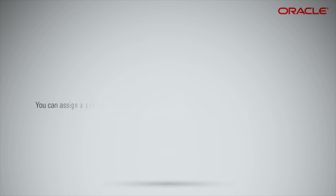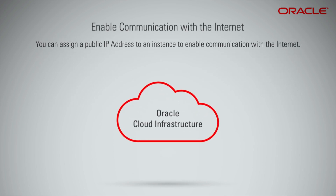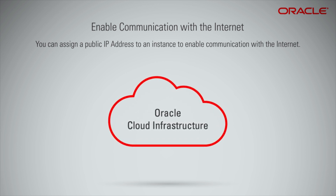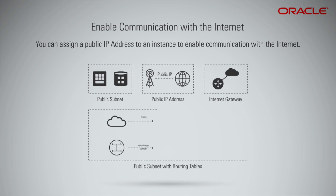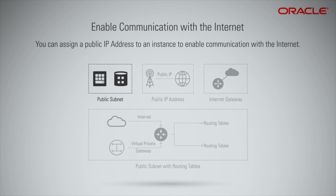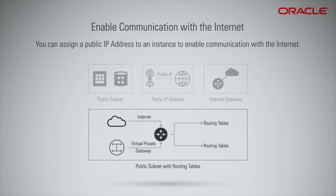You can assign a public IP address to an instance to enable communication with the Internet. The instance is assigned a public IP address from the Oracle Cloud Infrastructure address pool. To communicate directly with the Internet, all of the following are required: the instance must be in a public subnet, must have a public IP address, its VCN must have an Internet gateway, and the public subnet must have route tables and security lists configured accordingly.